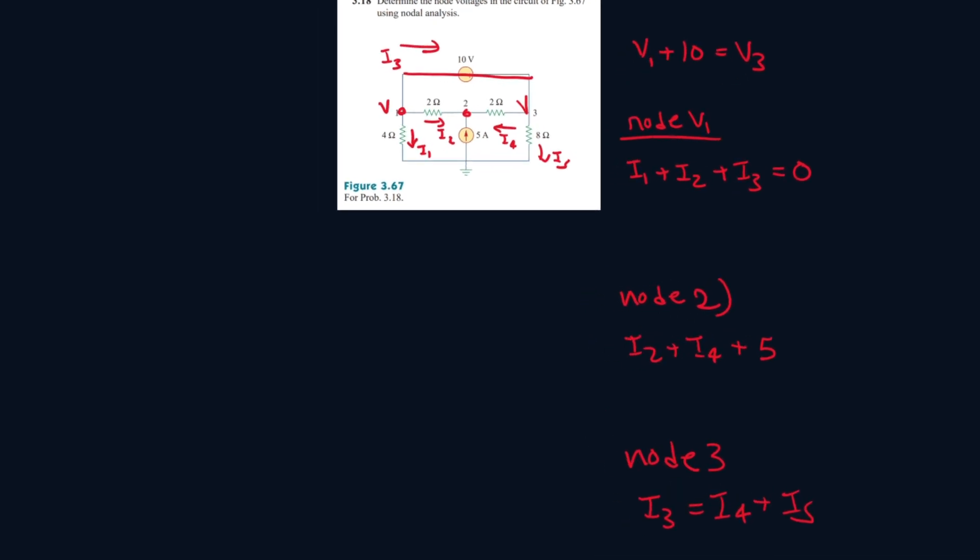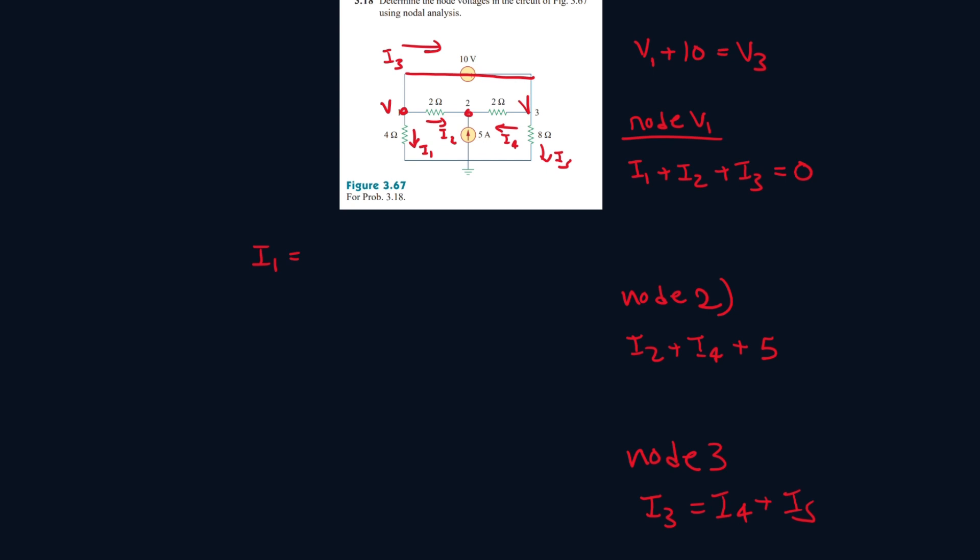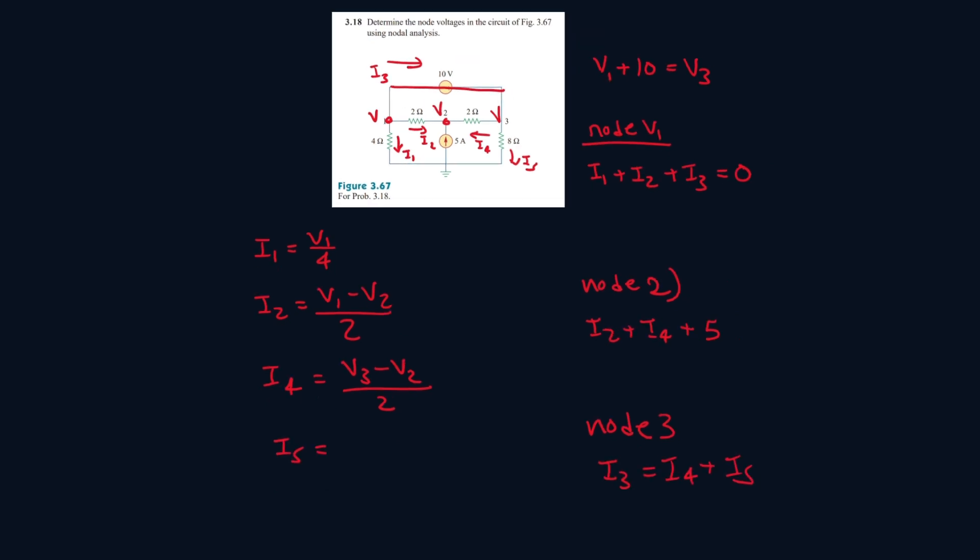Let's write the equations for our I values. I1 is V1 over 4. I2 is V1 minus V2 all over 2. We can't find the equation for I3 because there's absolutely no way for us to find it. I4 is V3 minus V2 all over 2, and I5 is V3 all over 8.